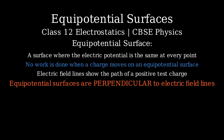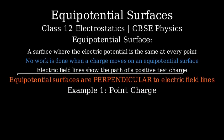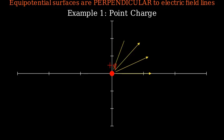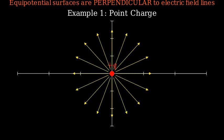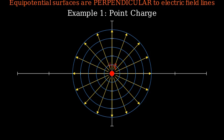Let's visualize this with some examples. First, let's consider a positive point charge. The electric field lines radiate outward from the charge in all directions. For a point charge, the equipotential surfaces are concentric spheres centered on the charge.